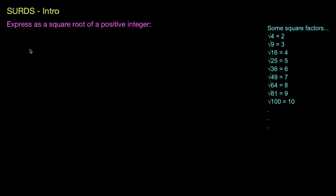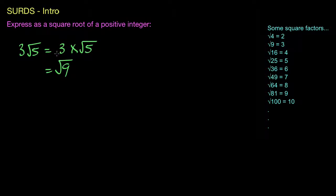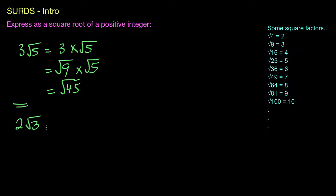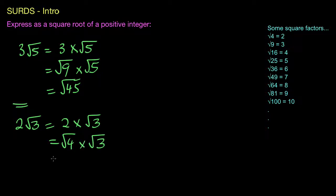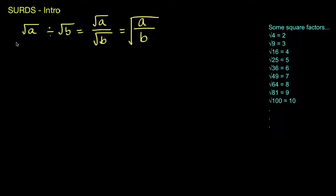To turn simplified surds back into plain square roots, take something like 3√5. This is 3 times the square root of 5, and 3 could be expressed as the square root of 9 (since 3 squared is 9). So we get the square root of 9 times the square root of 5, which equals the square root of 45. Another example: 2√3. That's 2 times the square root of 3, and 2 squared is 4, so it's the square root of 4 times the square root of 3, which equals the square root of 12.